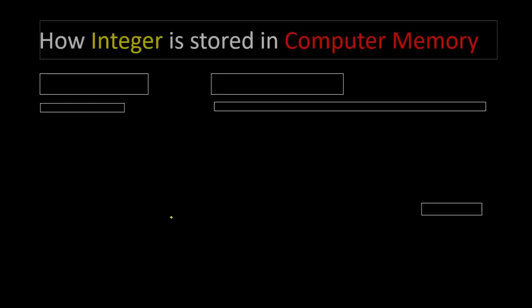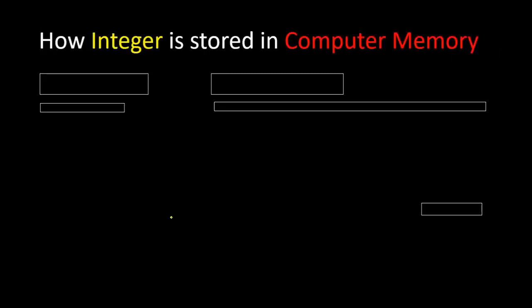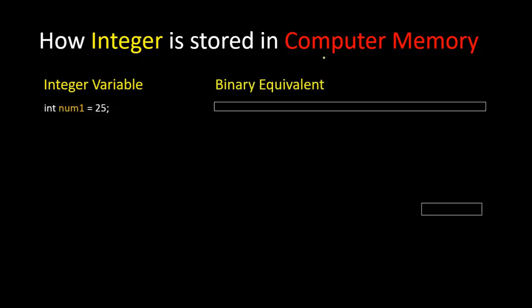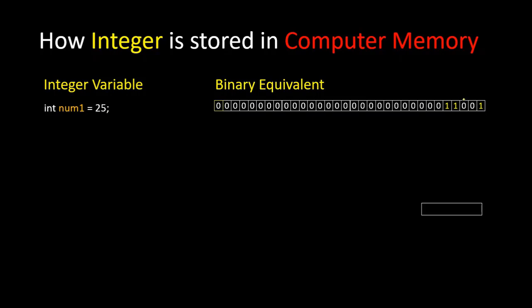Welcome back. In this video we're going to be talking about how integers are stored in computer memory. We will also talk about two's complement and the practical uses of two's complement. If we have this variable int number one equals to 25, we know for an integer type variable we have memory allocation of 4 bytes, and we know 4 bytes equals 32 bits. If we convert the number 25 into binary, it will look like this.